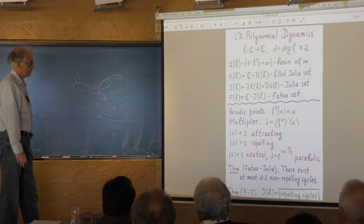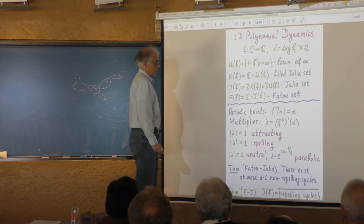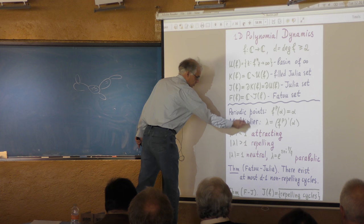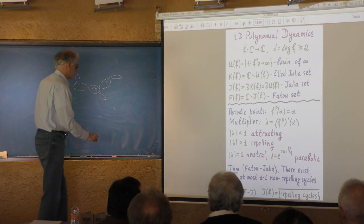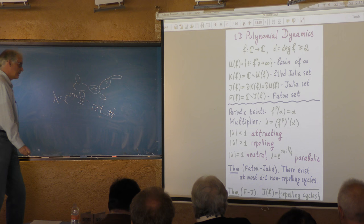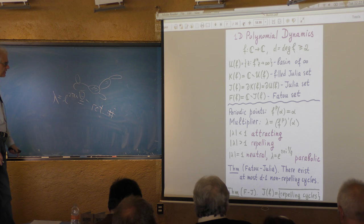The theory is very much related to the nature of periodic orbits in the dynamics. The orbits are classified according to the multiplier of the periodic orbit. If the multiplier is less than one in absolute value, the point is attracting; if greater than one, it is repelling. The most delicate case is neutral, when the multiplier has absolute value equal to one. It can be written in the form e^{2πiθ}, and θ is called the rotation number. If the rotation number is rational, the point is called parabolic; otherwise it is irrational. The nature of the dynamics depends strongly on the arithmetic of this rotation number.